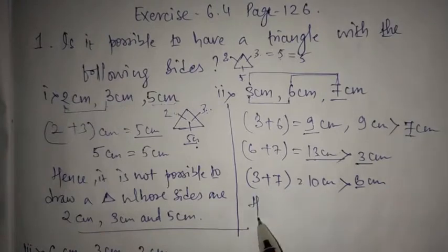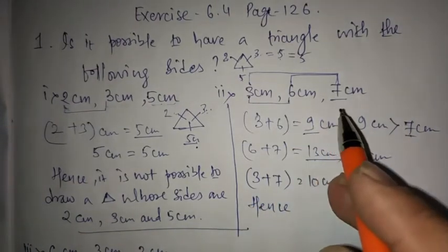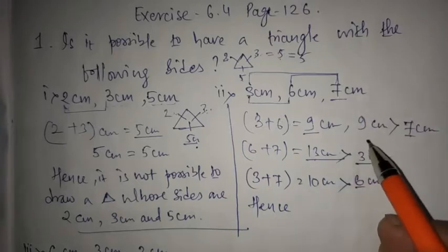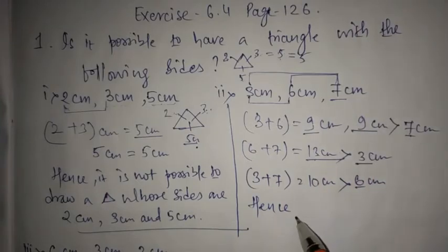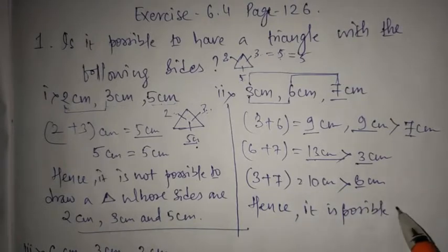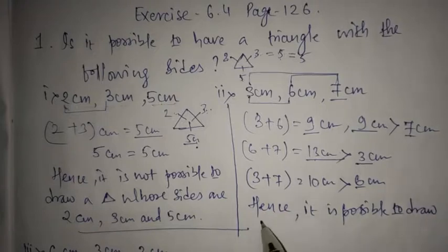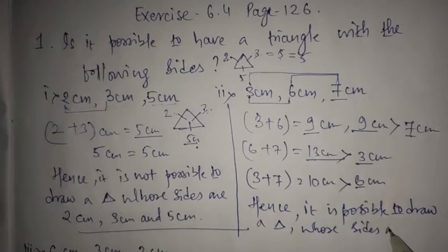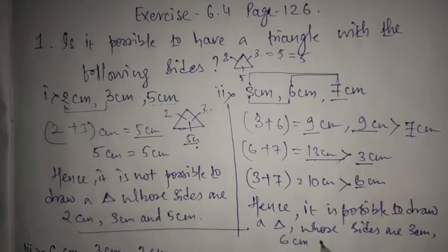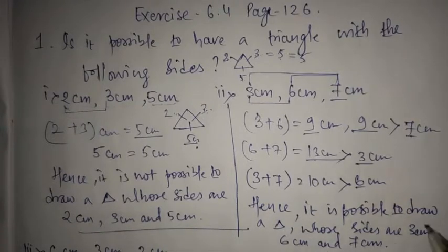So we can write: hence, for every possible combination, the sum is greater than the remaining side. Therefore, it is possible to draw a triangle whose sides are 3 cm, 6 cm and 7 cm. For this condition, the triangle is possible to form.